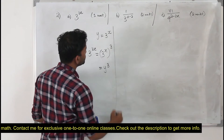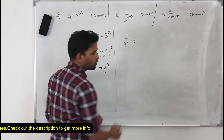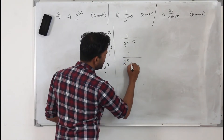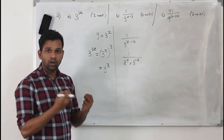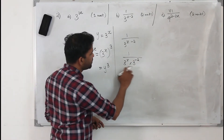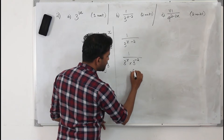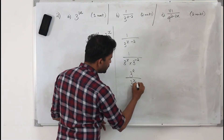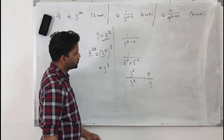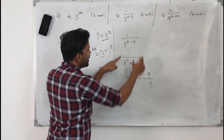Moving on to part b, we have 3 to the power x minus 2. You split them as 3 to the power x multiplied by 3 to the power minus 2. Laws of indices say 8 to the power m times 8 to the power n equals 8 to the power m plus n. This 3 to the power minus 2, when brought to the numerator, becomes positive 2. So 3 squared is 9, and 3 to the power x is y. The answer is 9 upon y. This question has two marks.